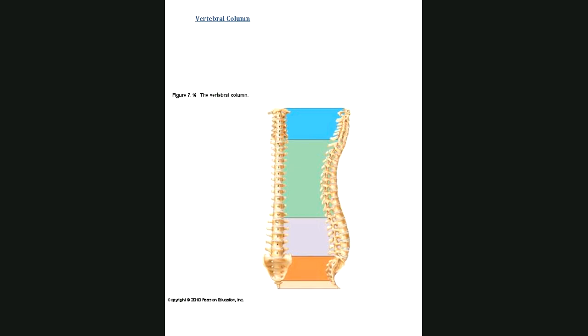On our vertebral column, we have the cervical vertebrae. C1 is the atlas. C2 is the axis. We have our 12 thoracic vertebrae, 5 lumbar vertebrae, our sacrum.